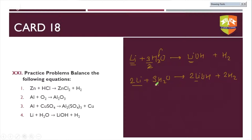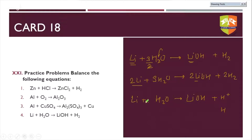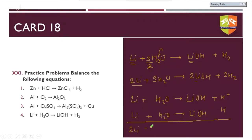Another approach for Li + H₂O → LiOH + H₂: recognise that from H₂O taking out OH leaves one H, and to form H₂ you need two hydrogens, so the reaction must happen twice. Write it as: Li + H₂O → LiOH + H and add it twice, giving 2Li + 2H₂O → 2LiOH + H₂. Check: four hydrogens on each side, two oxygens each side, two lithiums each side — balanced.